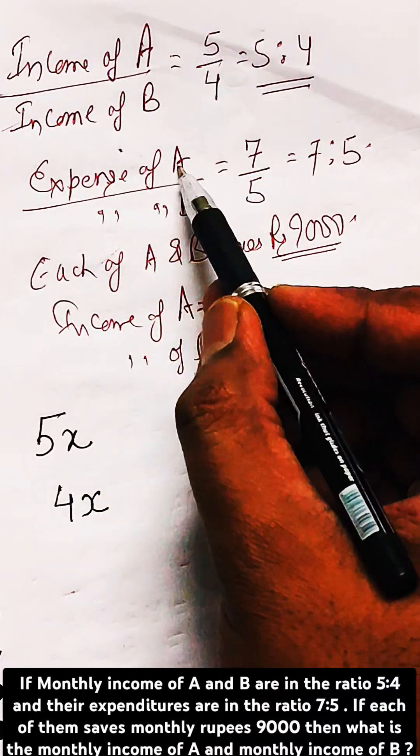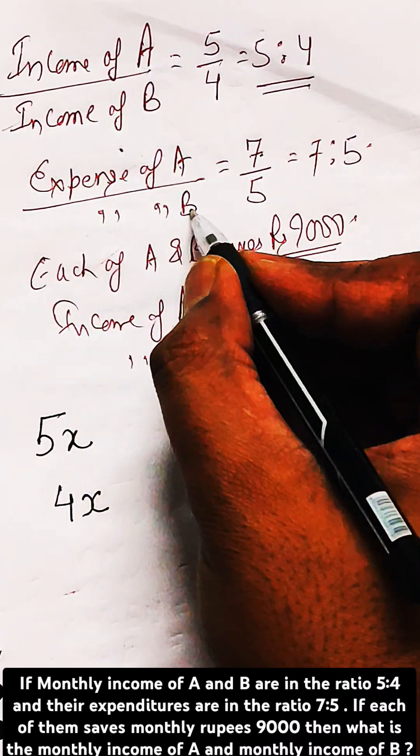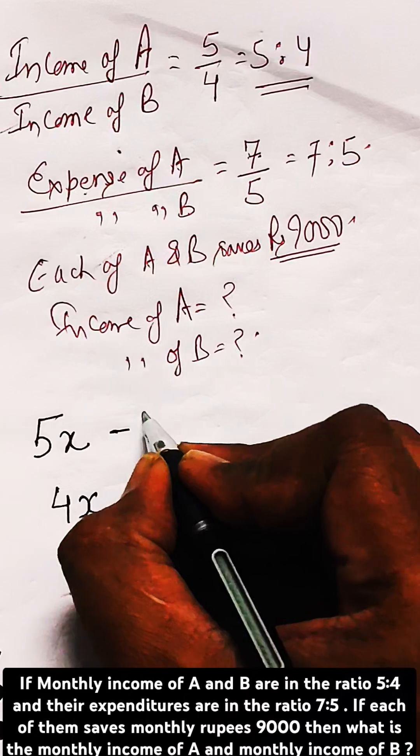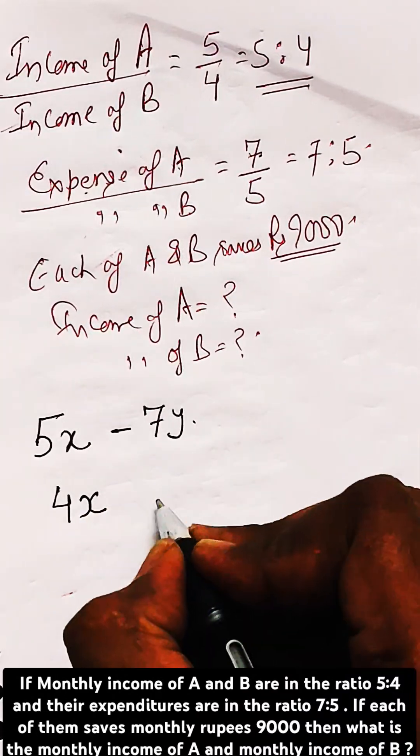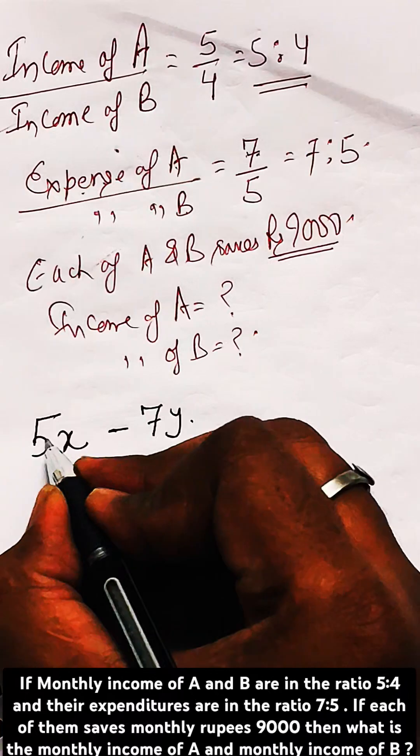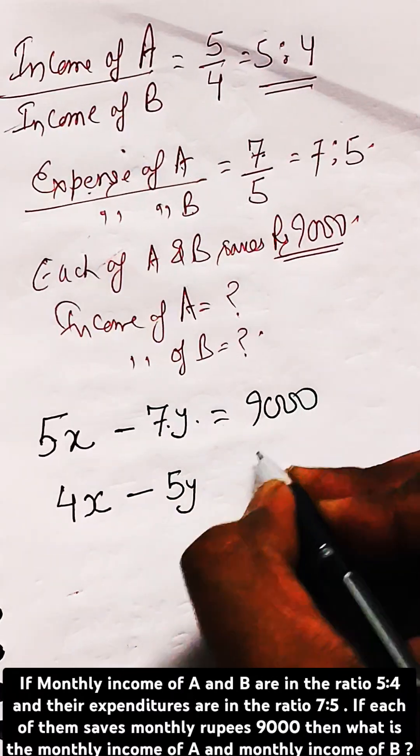Now the expense of A and B is in the ratio 7 is to 5. So let's say the expense of A is 7y and expense of B is 5y. Earning minus expenses will give you the saving of 9000.